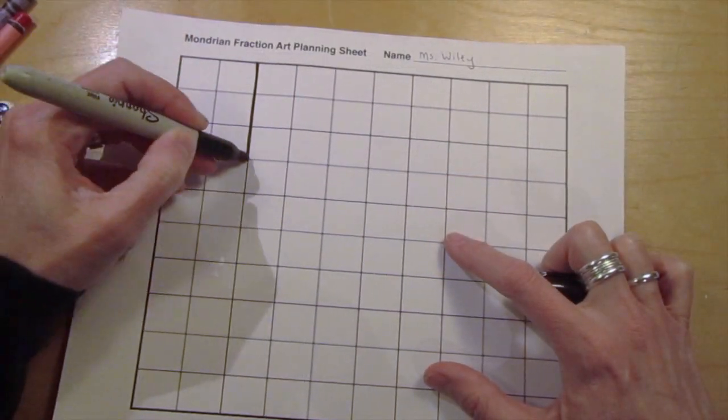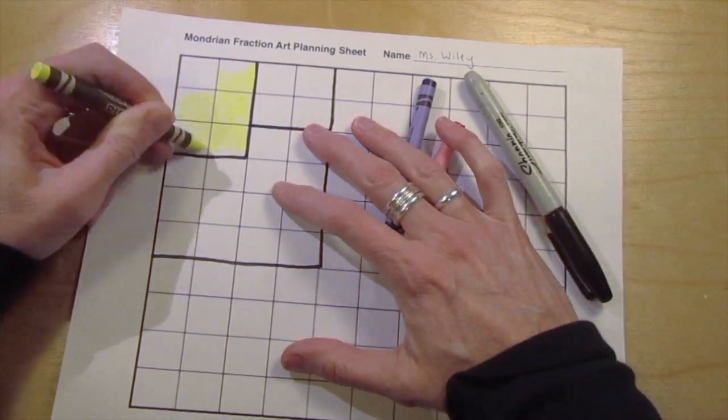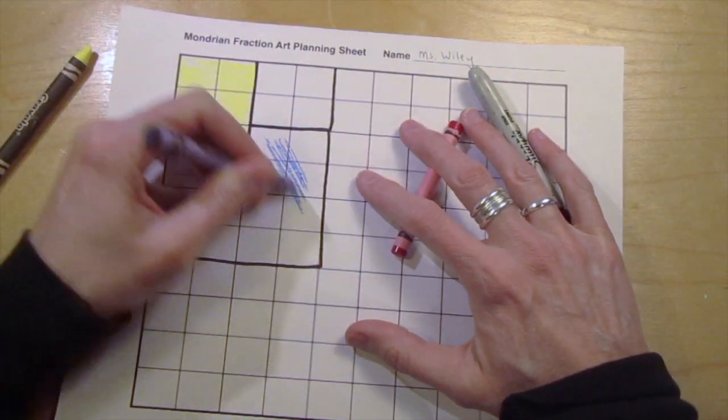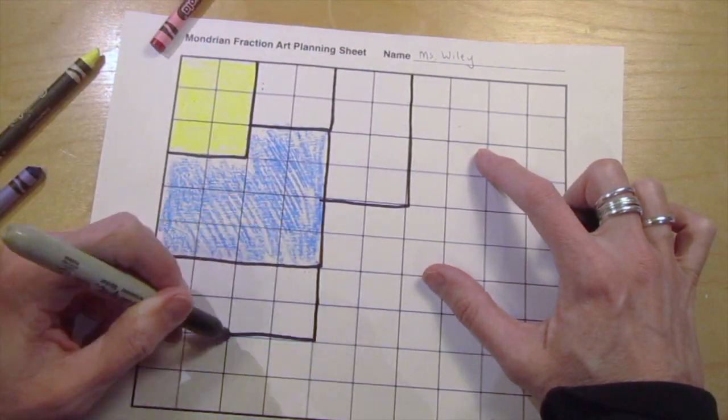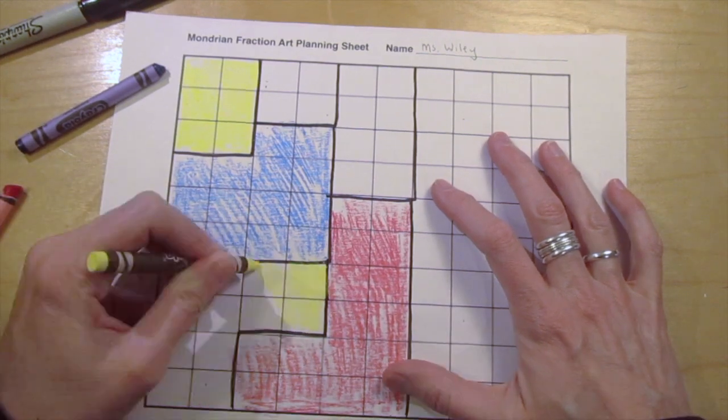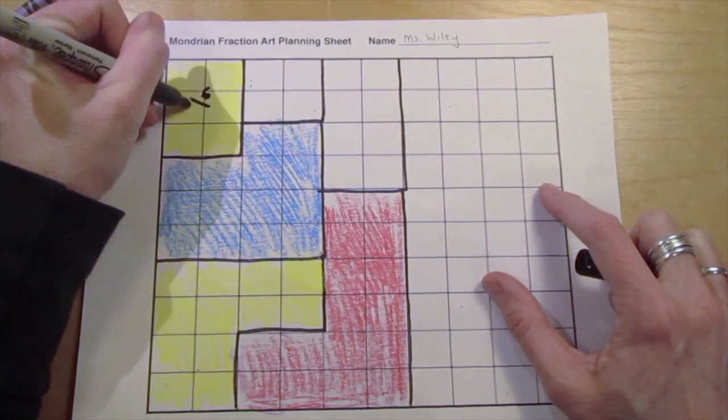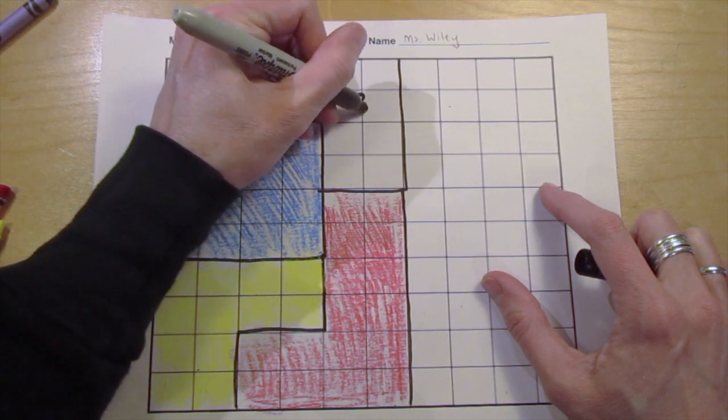For your work of art, you will begin by creating squares and rectangles of different colors on the planning sheet. Your sections can be red, yellow, blue, or white. The white ones will not need to be colored in. You might notice that the paper is a grid made up of a hundred squares. Every time you make a section, you will record a fraction that represents that section of the grid.